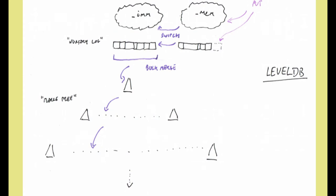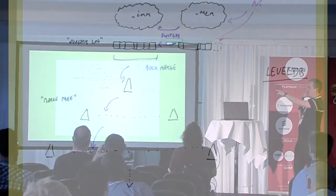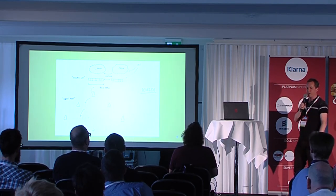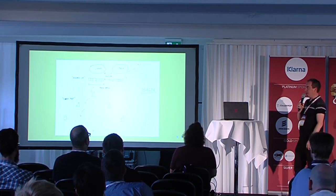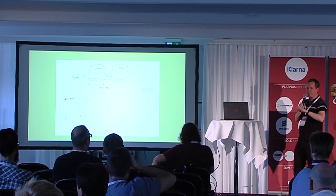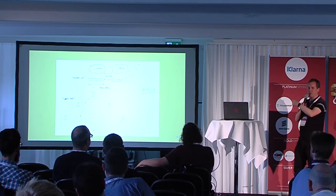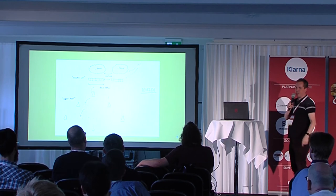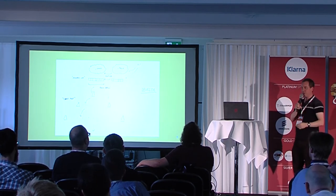Looking at how LevelDB works in a scruffy drawing: a put goes into the in-memory table — a skip list — which gives you a sorted view of the most recently received keys. The key and value are written to a log below, ordered by sequence received. When that in-memory store is full, it's pushed to one side, made immutable, and a new store is started. That log — the nursery log — is then a candidate to be merged down into the tree, and the keys and values ripple down.